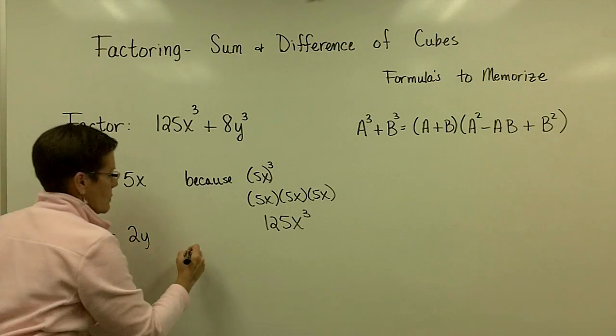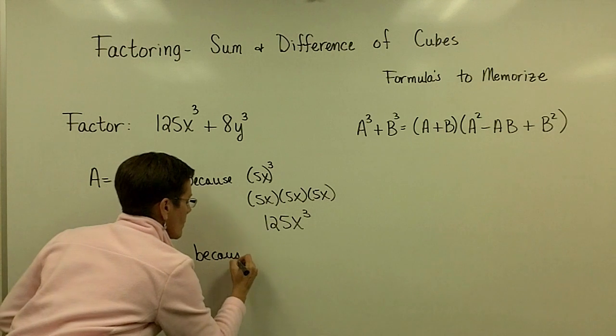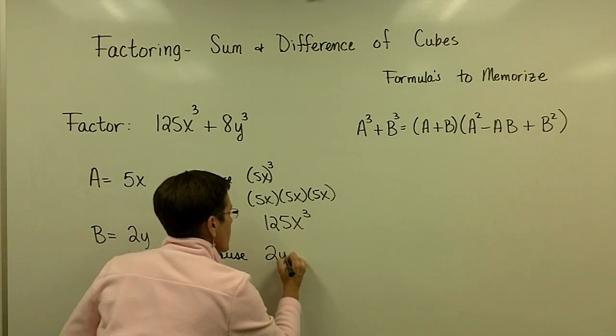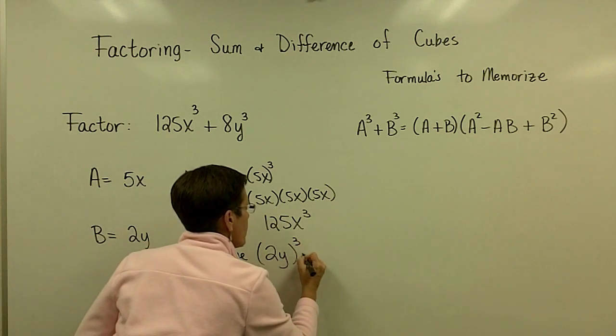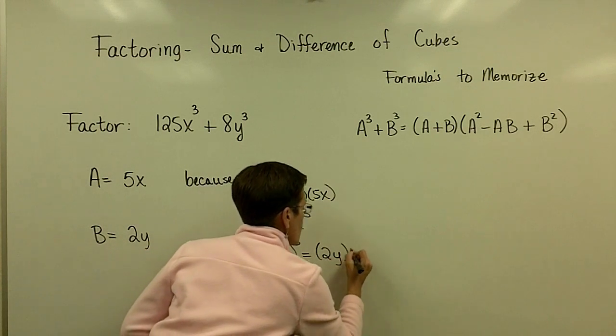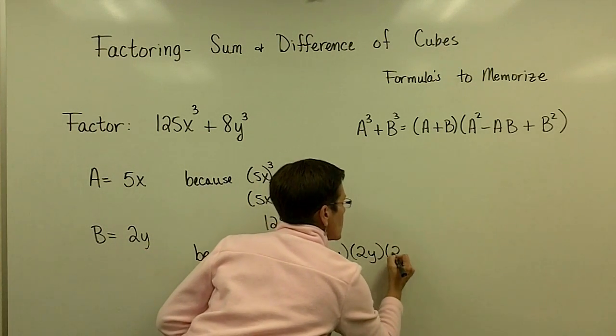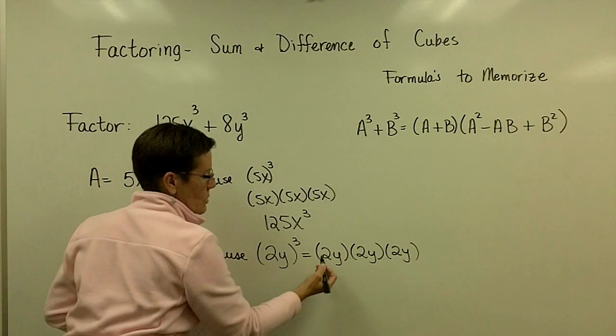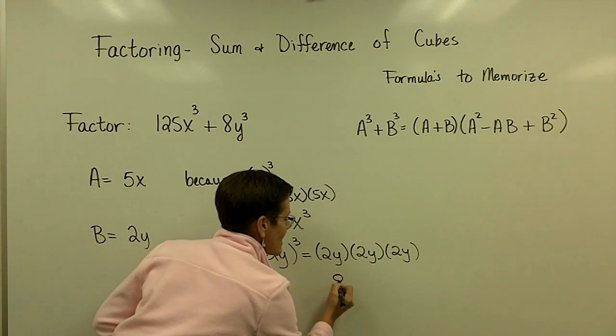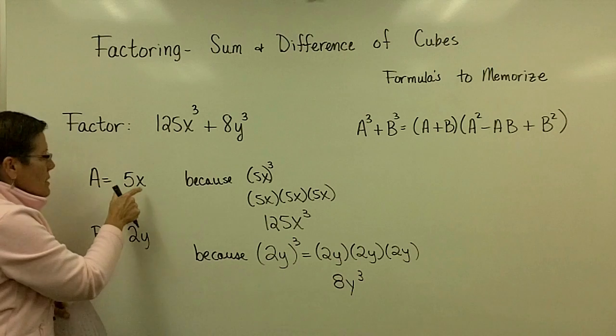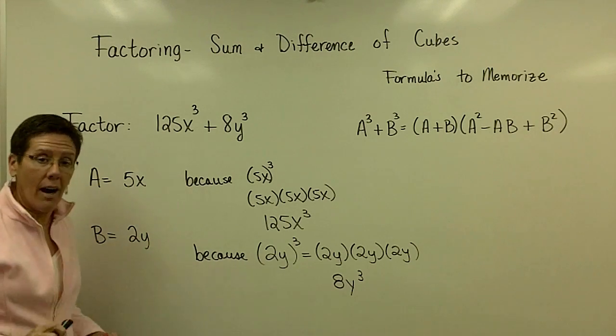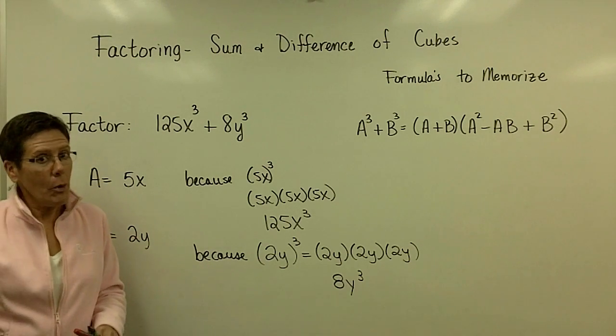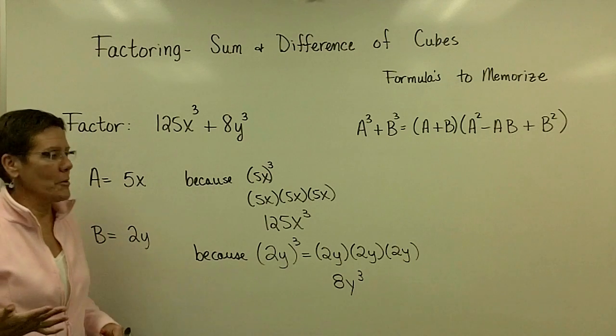And my B value in this problem is going to be 2y. And that is because 2y to the third power is 2y times 2y times 2y, which is 2 times 2 is 4 times 2 is 8y cubed. So establishing what A and B are is an important step, and that is the hardest step for most people.